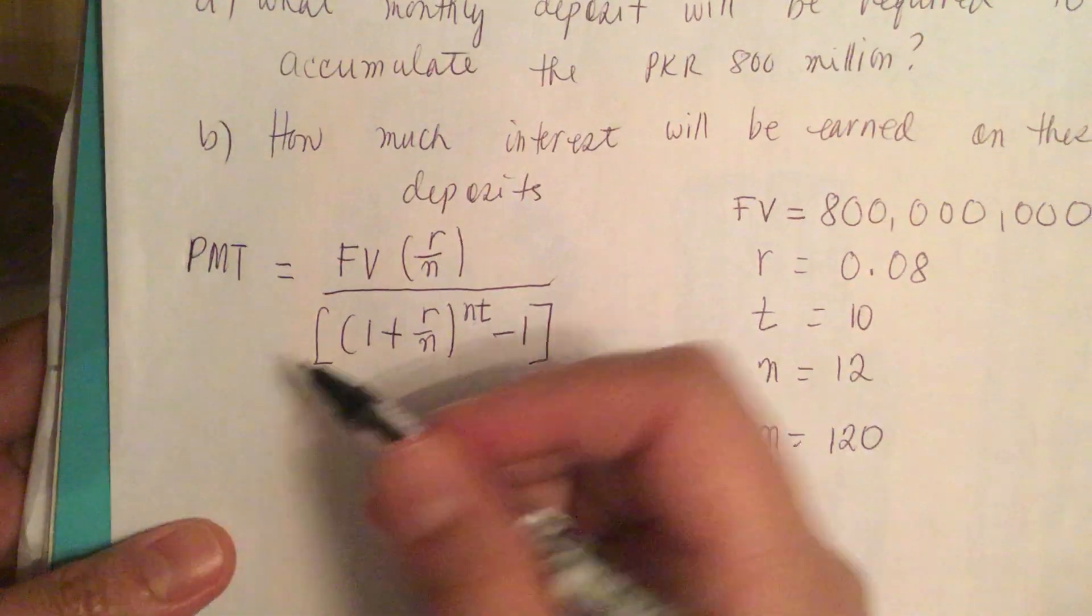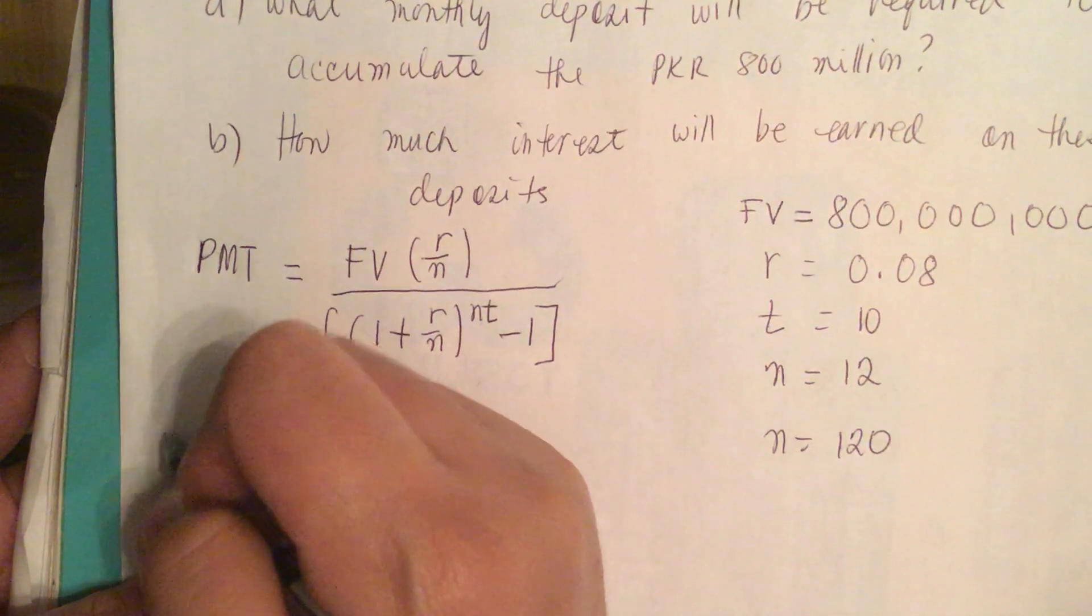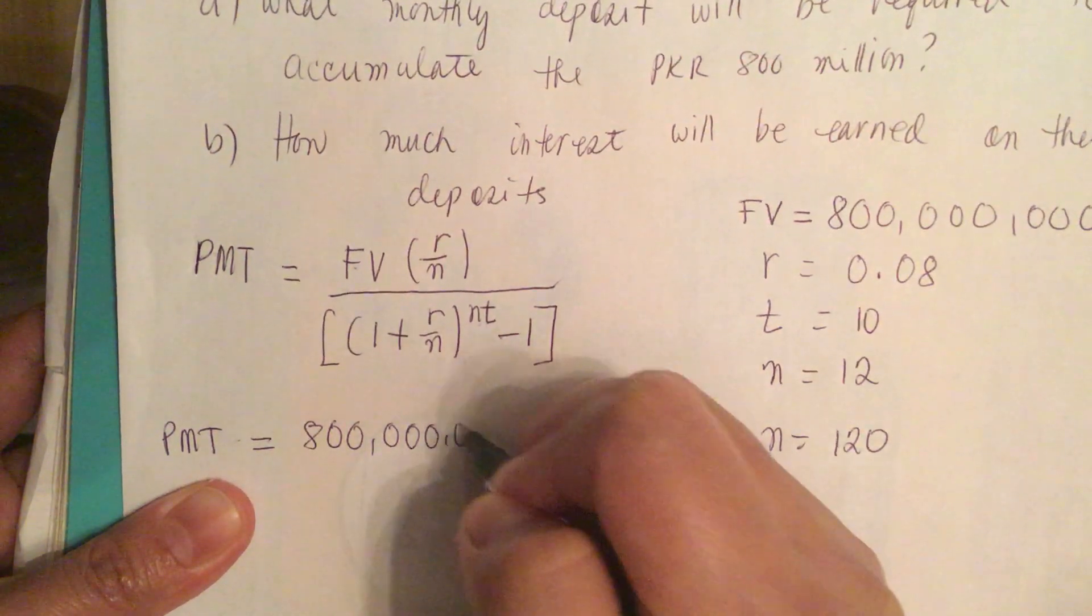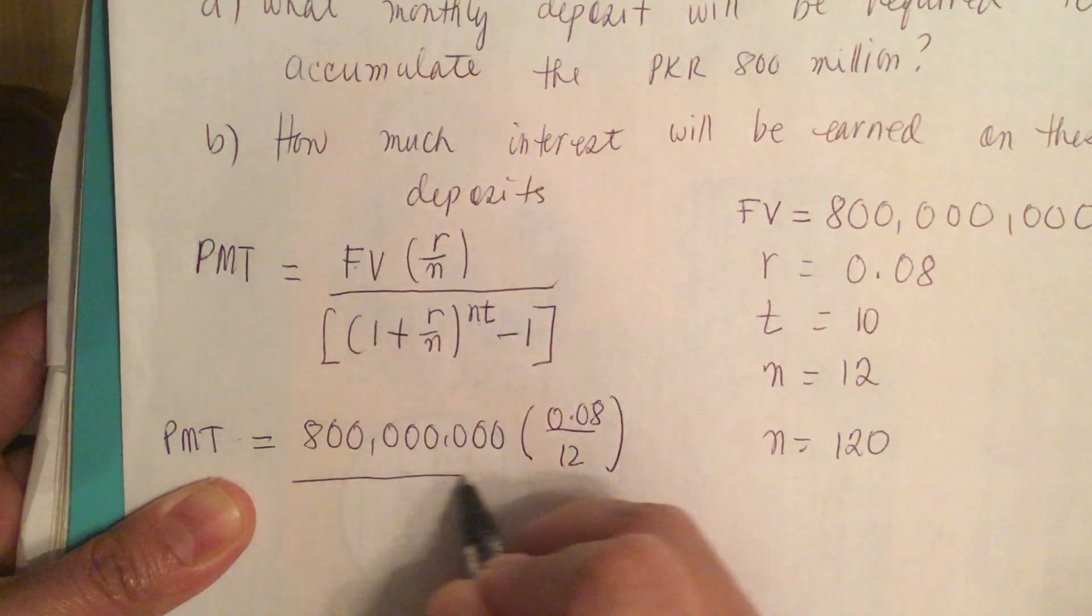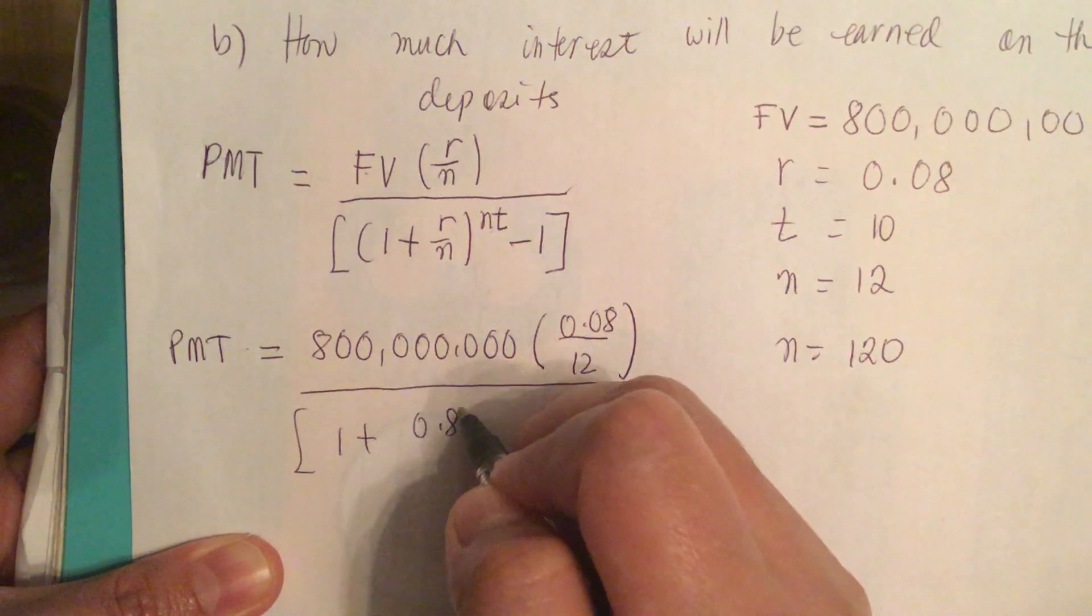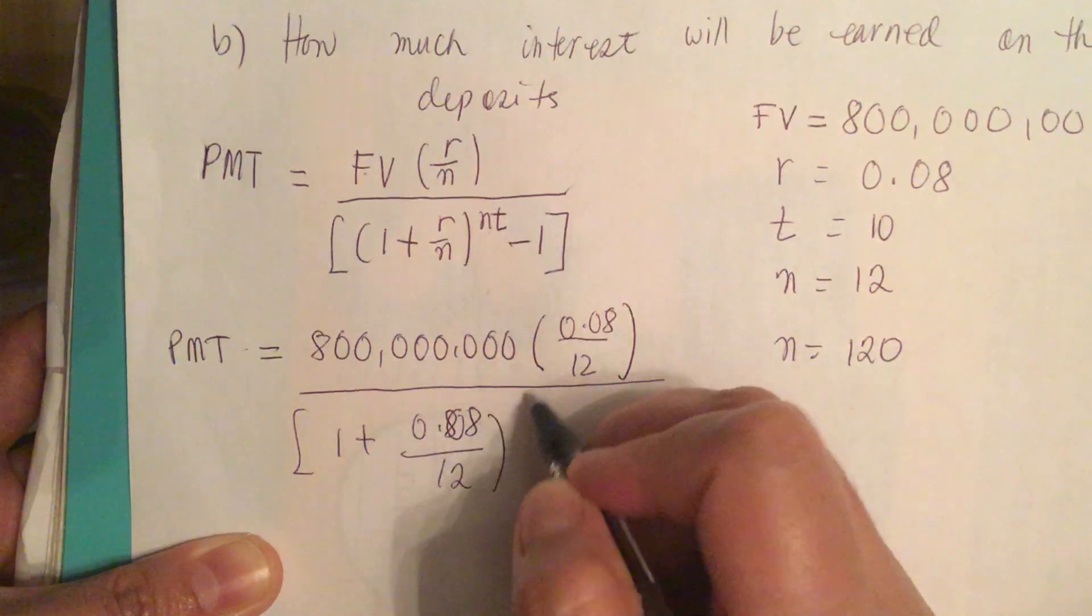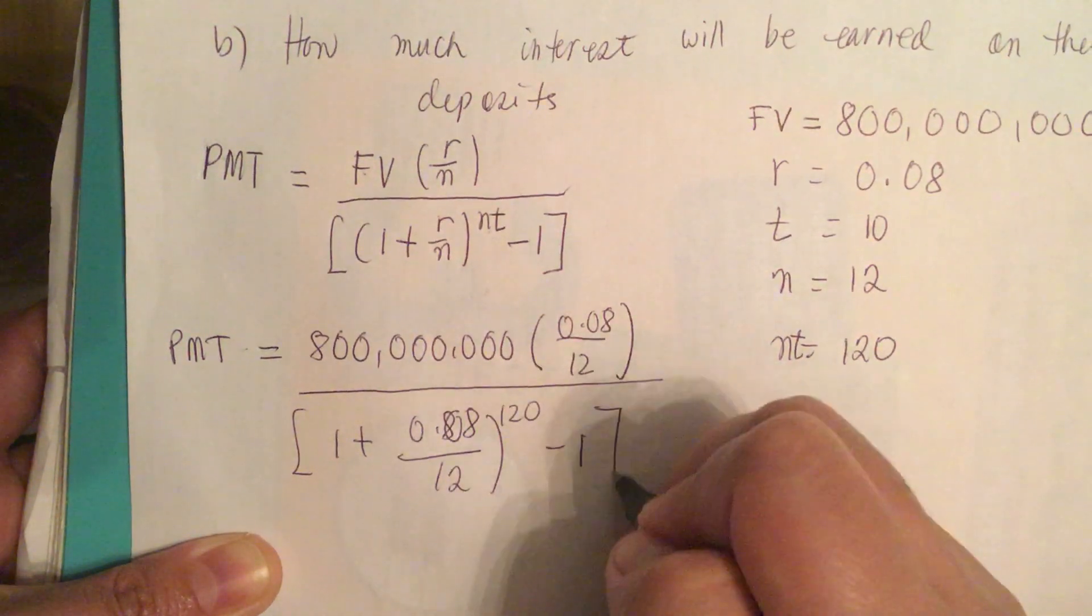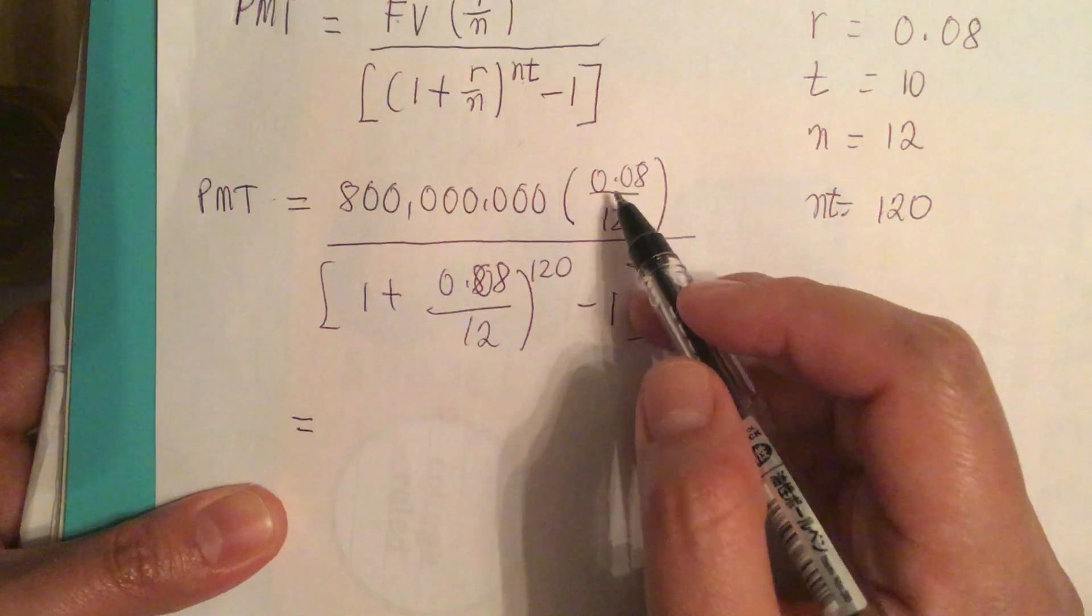Now we plug in our numbers into the equation to find our monthly payment. This equals 800 million times 0.08 over 12, all over [1 + 0.08/12]^120 - 1.